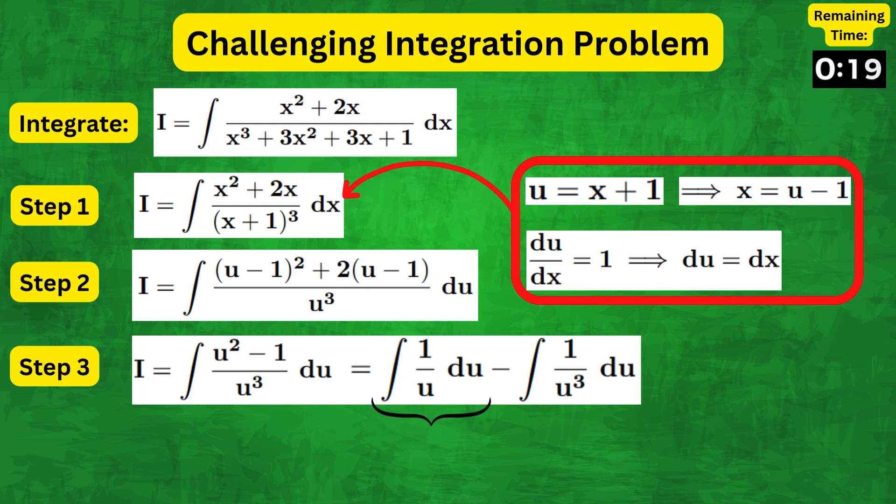So, integrating the first term, we get natural log of modulus of u. And for the second term, which can be written as u to the minus 3, we integrate to get minus 1 over 2u squared.